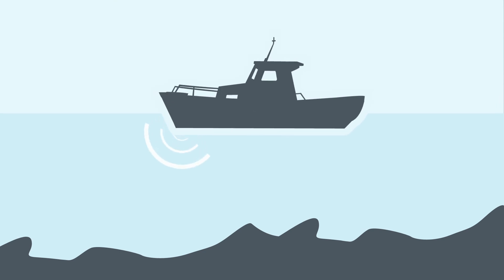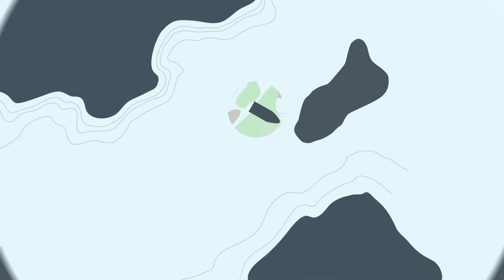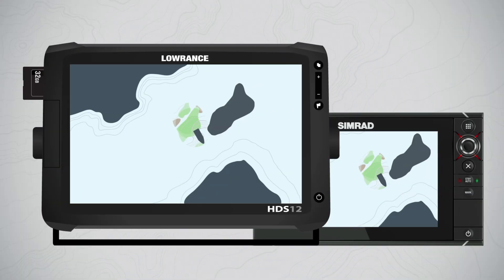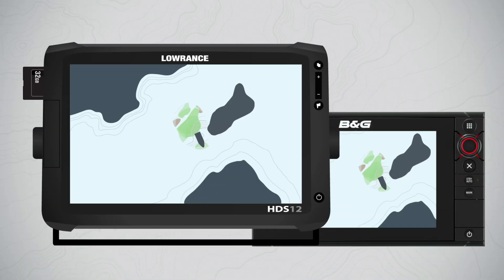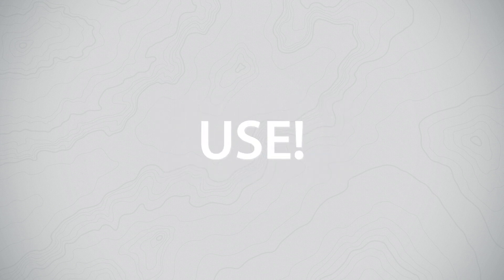Insight Genesis combines mapping innovation with cloud technology, empowering you to create custom coastal and inland maps from sonar data recorded with the Lowrance, Simrad, or BNG sonar unit on your own boat. Just follow three simple steps: Record. Upload. Use.